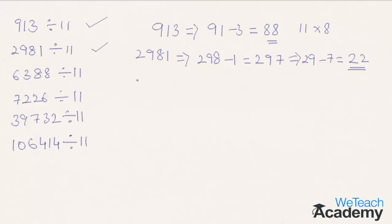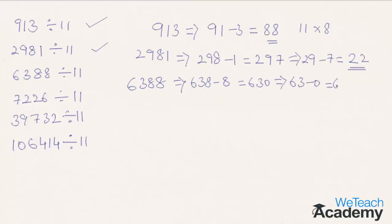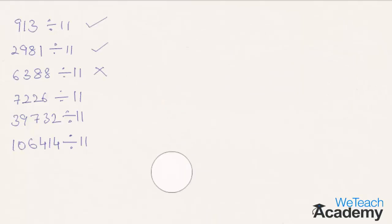Coming to the third example, that is 638. According to the concept, subtract the last digit 8 from the remaining number 63. We get 63 minus 8, which is equal to 55. Now repeating the concept again, subtract the last digit 0 from the remaining number 63. We get 63, and since 63 is not divisible by 11, the given number is not divisible by 11.